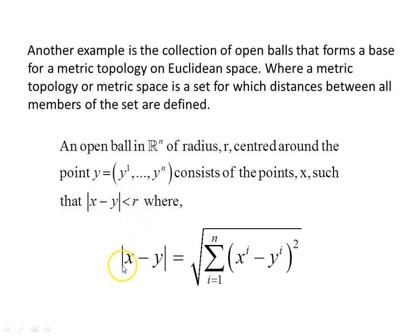The absolute value of X minus Y is the square root of the sum from i=1 to n of (Xi minus Yi) all squared. So that distance has to be less than some radius R. Think of a spherical ball in three dimensions — the end points are not included. In n dimensions, again the end points are not included for that ball. It's an open ball.